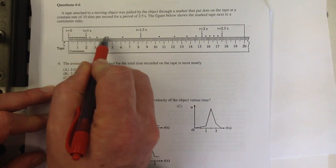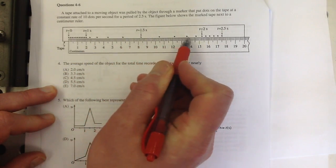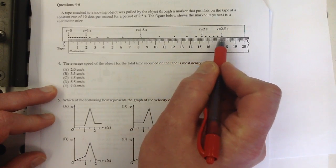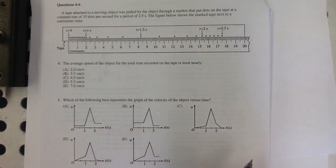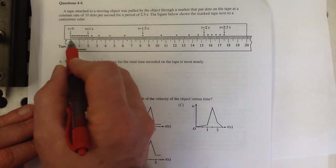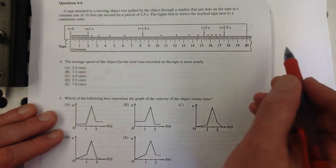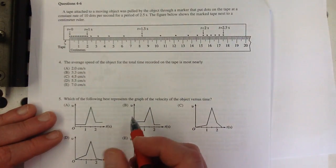And then it looks like it starts to accelerate—the dots are getting further apart. And then they get closer together again. And then dot, dot, dot, dot, dot, dot again at the end. Right? So it gives us an idea what's happening there. You'd have to pull it through very slow to get all those dots to be close together. If you pulled really fast, the faster you pull, the further apart the dots are.